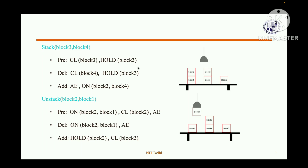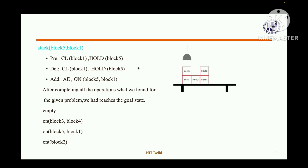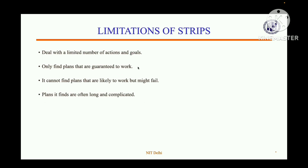The robotic arm then takes block two and puts it on the table, picks up block five, and stacks it above block one — achieving our goal. After completing all operations, we have: the robotic arm empty, block three on block four, block five on block one, and block two on the table, which was our goal state.